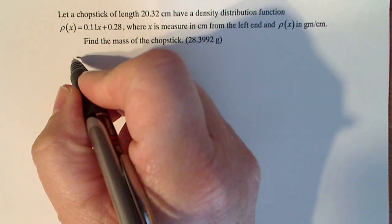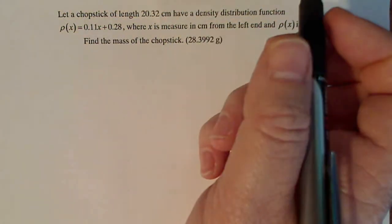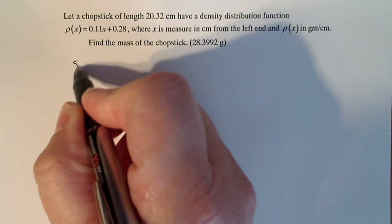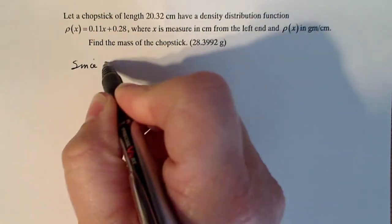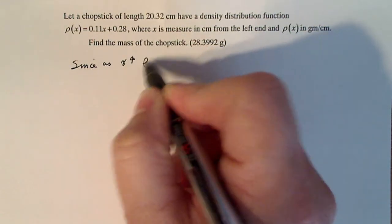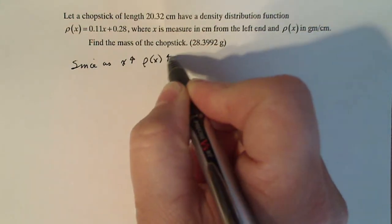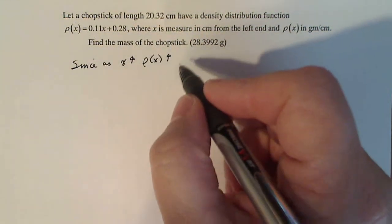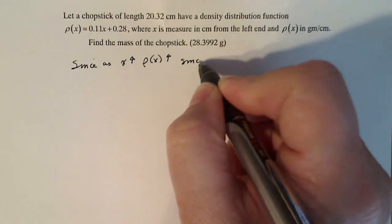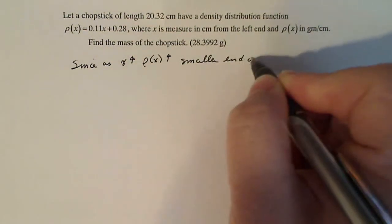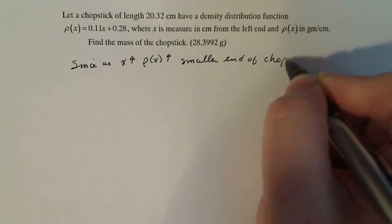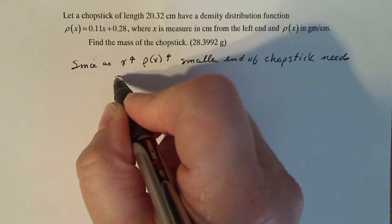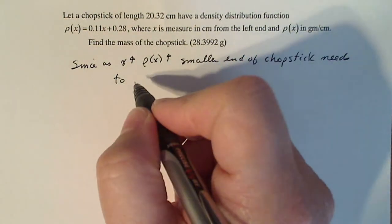We need to understand how this density function works in order to orient our chopstick properly. So let's see. Since as x increases, ρ(x) increases because this is an increasing function - it's a linear function whose slope is positive - the smaller end of the chopstick needs to go on the left of our grid.